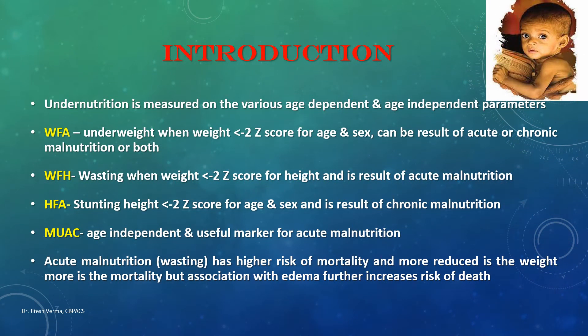As discussed in the previous two lectures on undernutrition and various age-dependent and age-independent anthropometric assessment parameters: weight for age is the most commonly used parameter. When weight for age is less than minus two z-scores for age and sex, it is designated as underweight, which can result from either acute or chronic malnutrition.